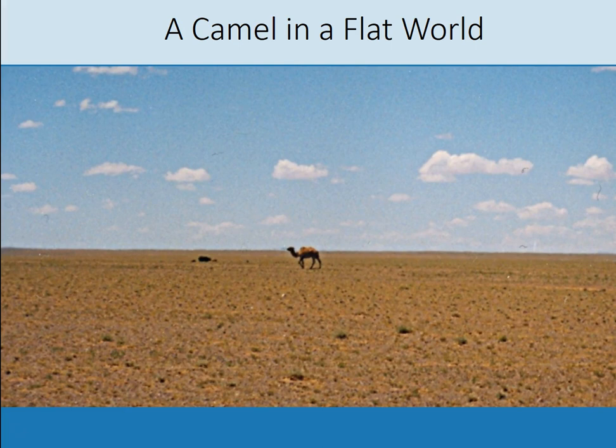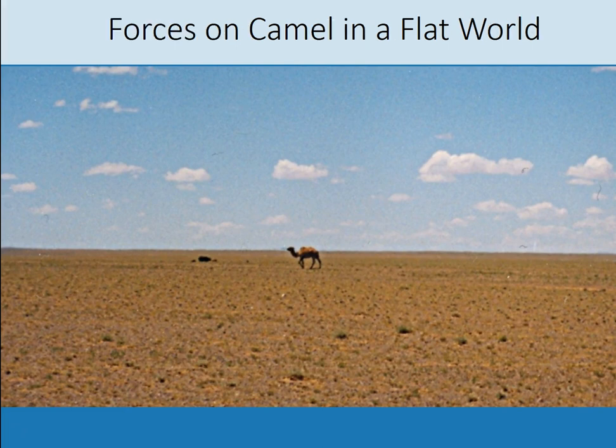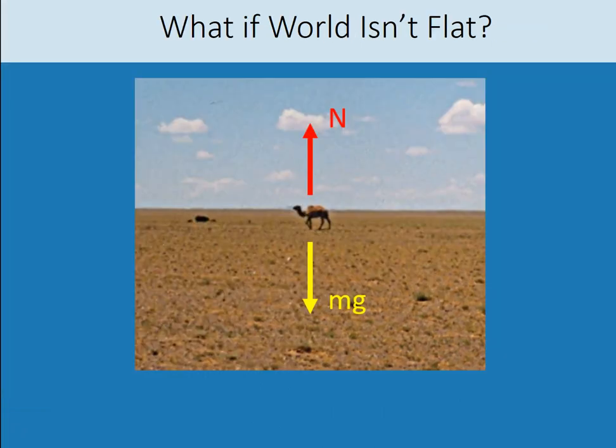So today we're going to think about what happens when we analyze things that are not on flat surfaces. Well, let's look at the forces on the camel in a flat world. We have gravity pulling down. Notice I'm beginning to use mg now whenever we're talking about gravity. And because there's a gravity force pushing the camel into the ground, the ground is pushing up with a normal force in the opposite direction. And this is what we've been dealing with.